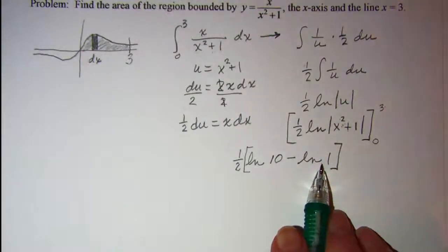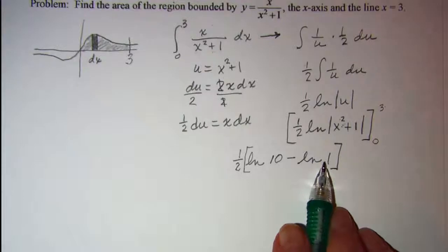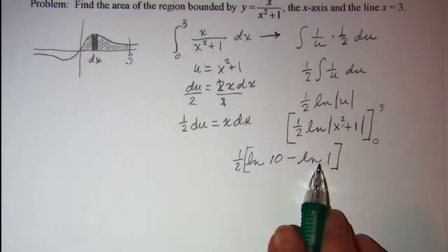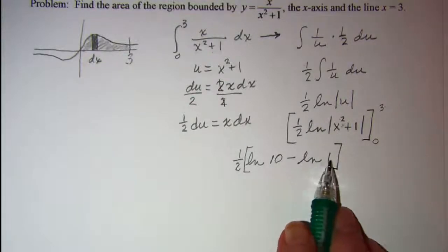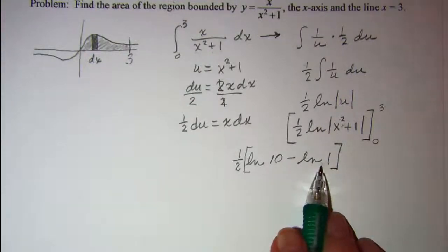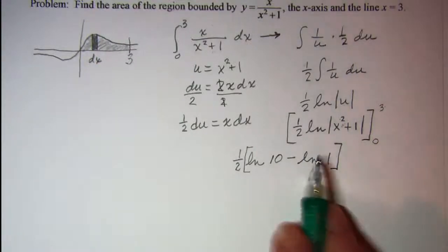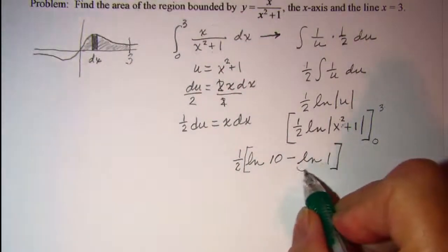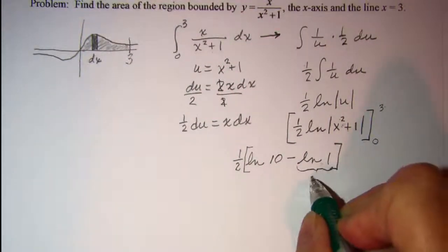If you have forgotten that, remember that the base is e. So to get the value of ln 1, you're asking yourself e raised to what power gives me 1. And anything raised to the 0 power gives you 1. So this is equal to 0.